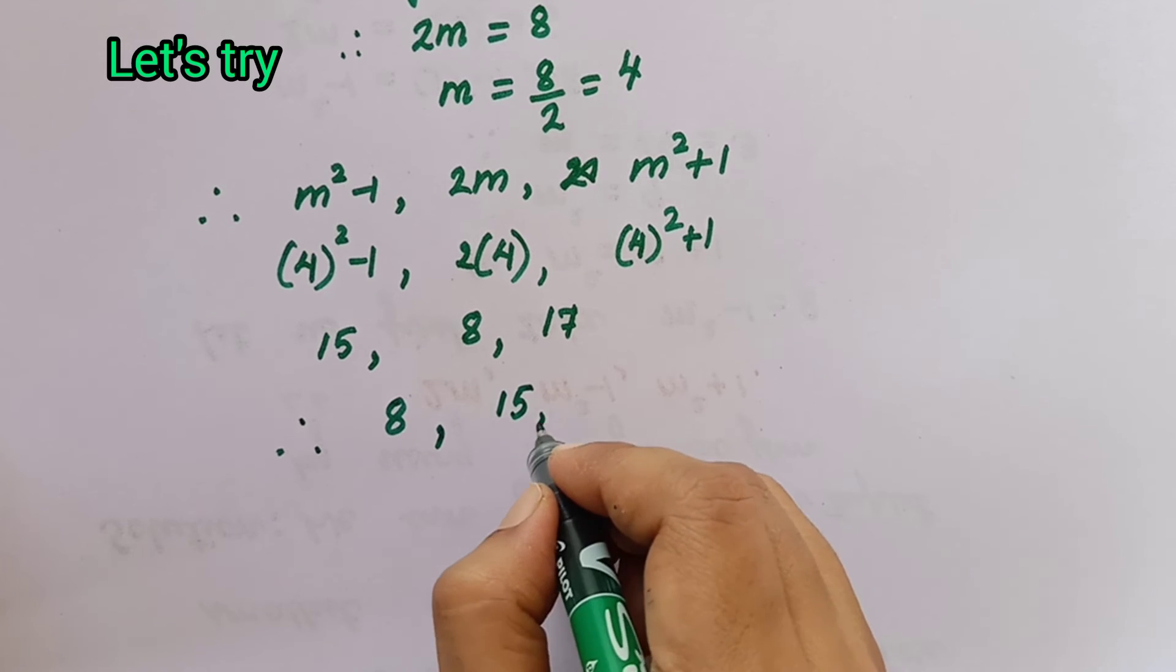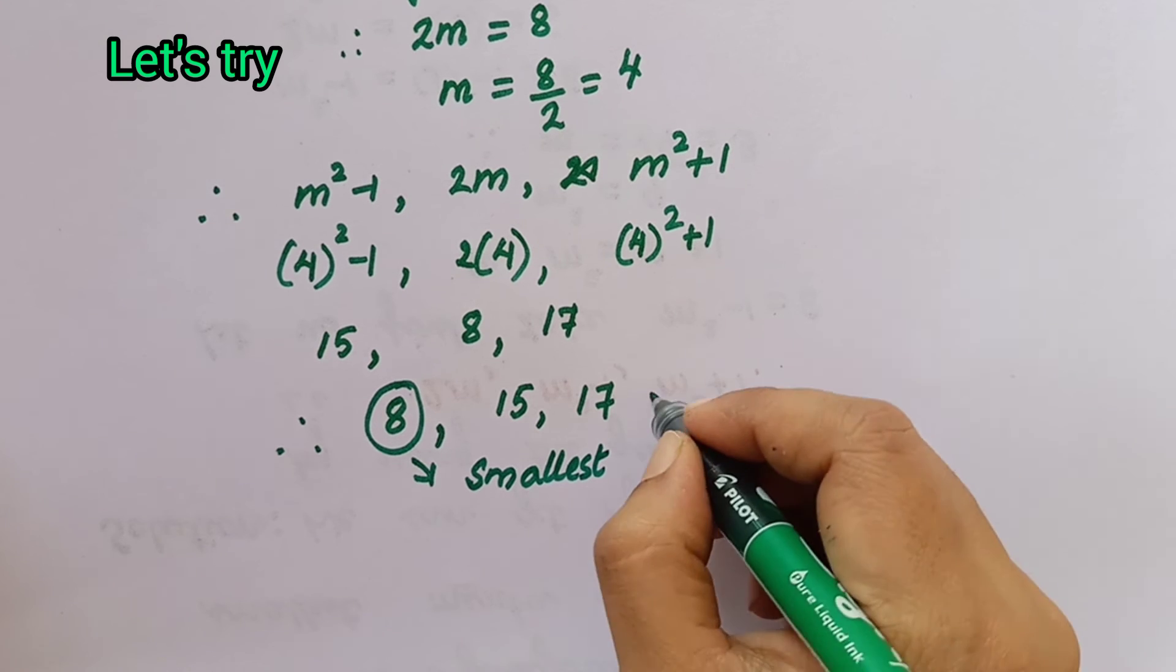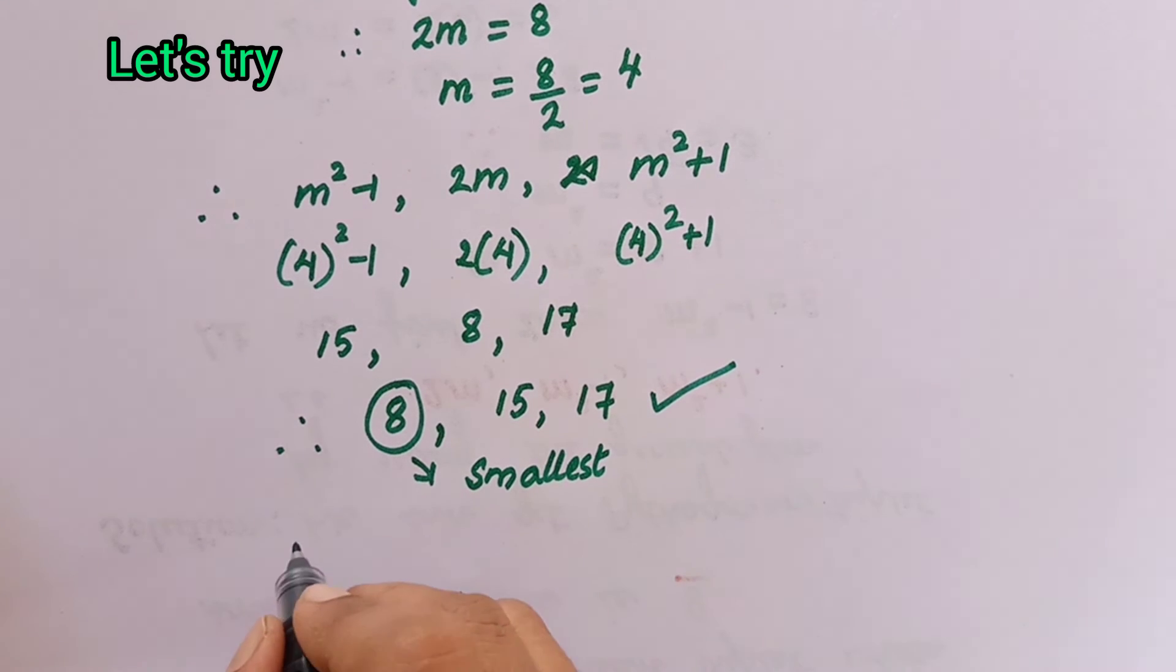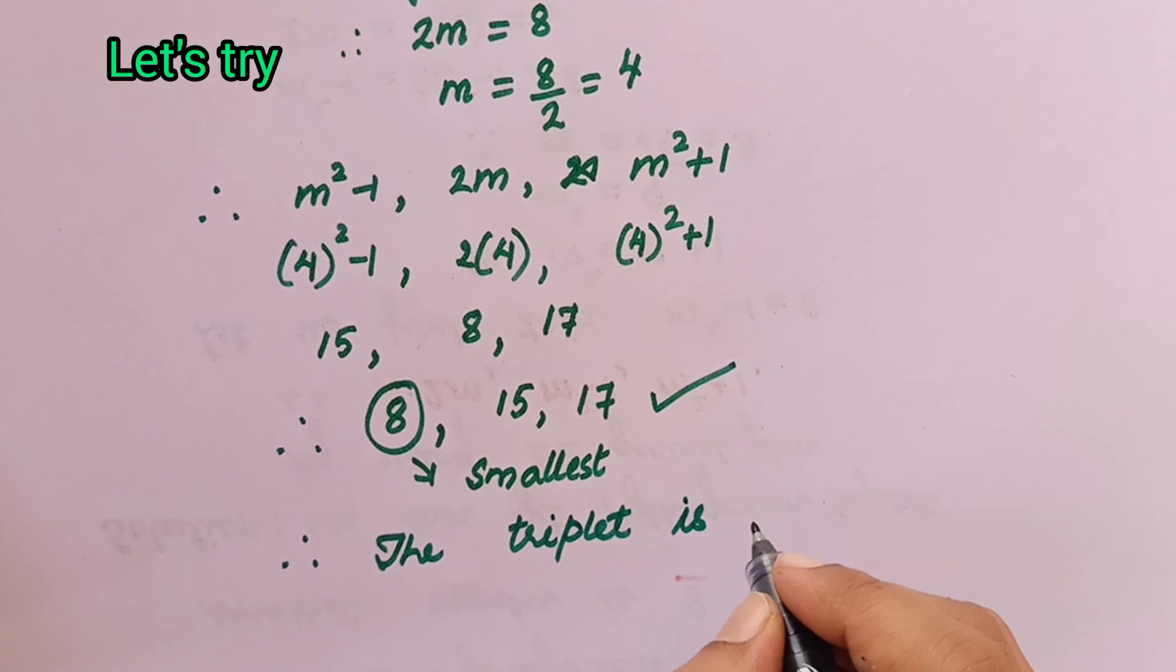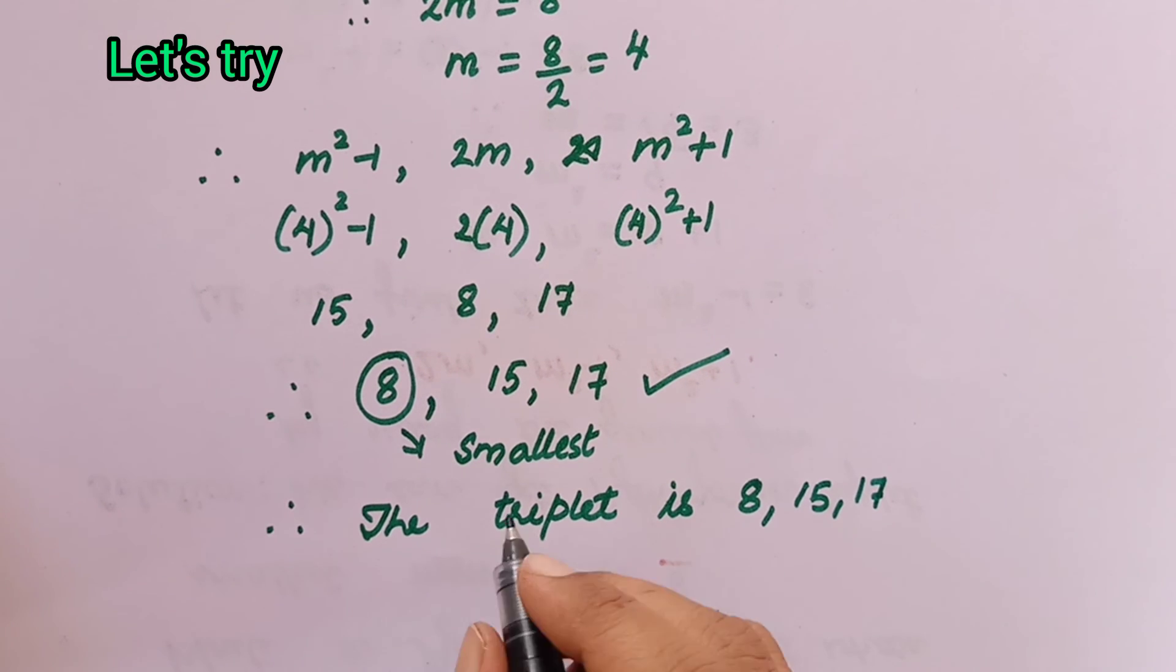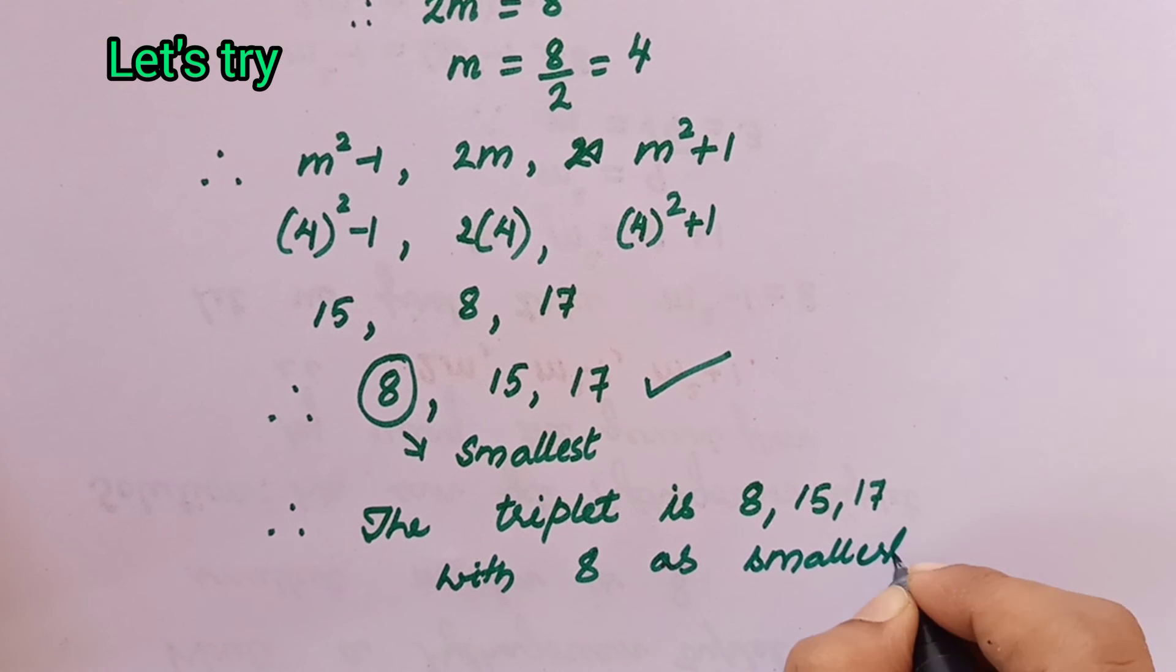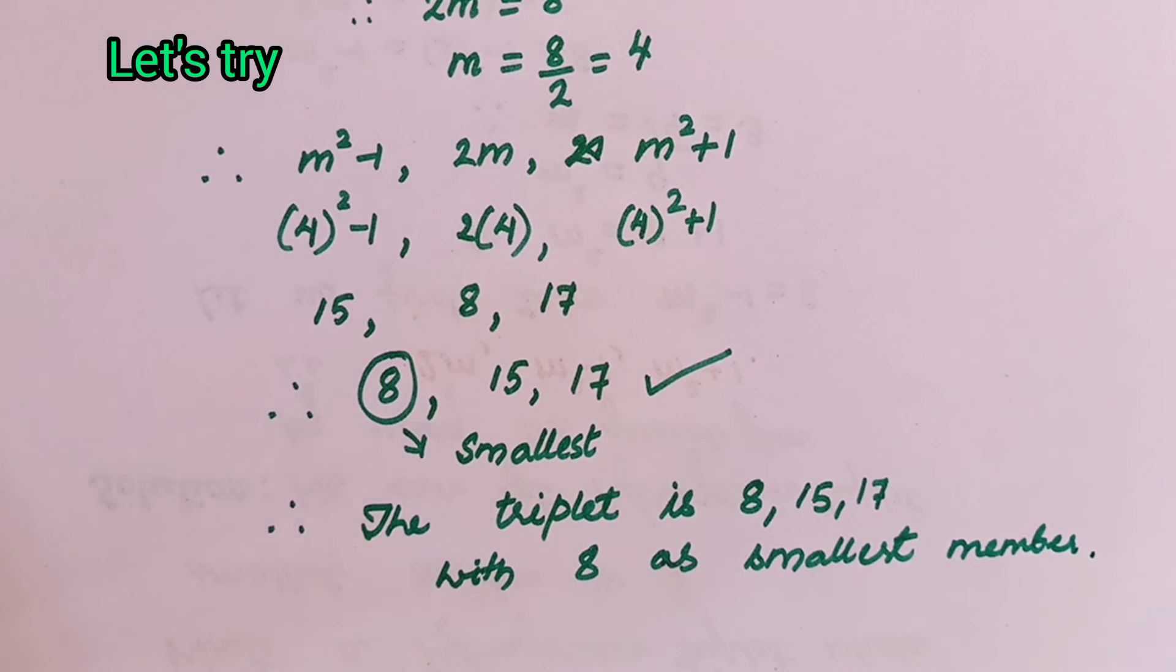Therefore, 8, 15, 17. Here we are getting the Pythagorean triplet where 8 is the smallest number. We can consider this Pythagorean triplet because in the question they asked to find a triplet where 8 should be the smallest number. Therefore, 8, 15, 17 is the required Pythagorean triplet where 8 is the smallest number. I hope you got this. Thank you.